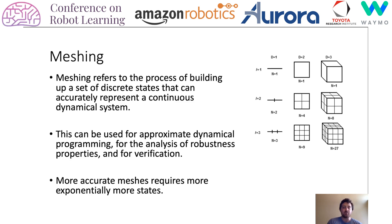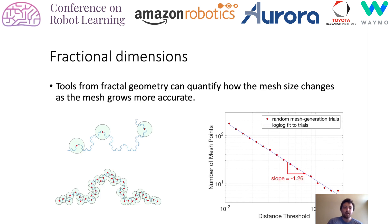This can be used for approximate dynamical programming, for the analysis of robustness properties of the system, and for verification at runtime that the system is in an explored part of the state space. In general, more accurate meshes require exponentially more states to be added to the mesh. The exponent which describes the rate of growth for these meshes is much smaller than the topological dimension of the space that the mesh is embedded in. Tools from fractal geometry can quantify exactly how this mesh size changes as the mesh grows more accurate, namely different notions of the fractional or fractal dimension.